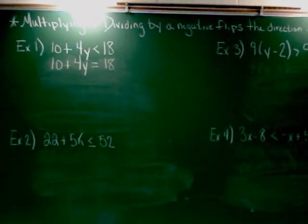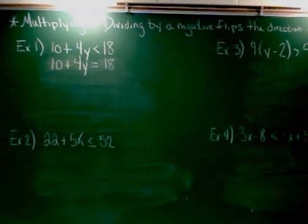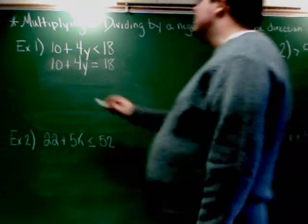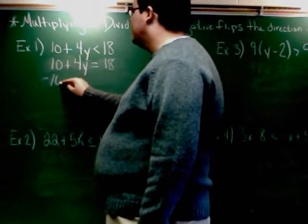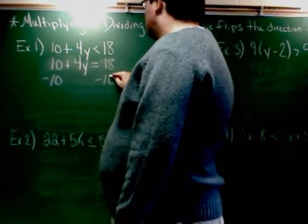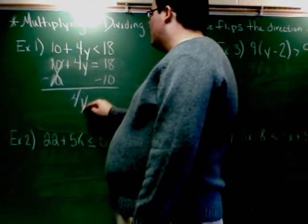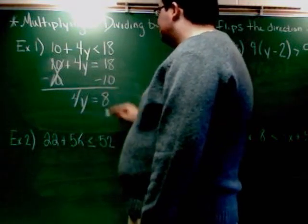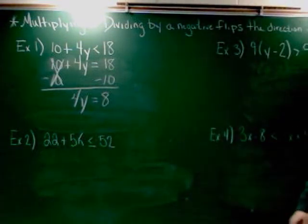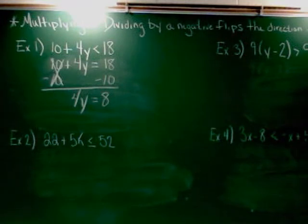So we know that 4y is where it's supposed to be on the left side. We know that 18 is where it's supposed to be on the right side. The only thing that's not where it's supposed to be is the 10. So I've got to go ahead and move the 10 out of the way. And I'm going to do that by subtracting. When I do that, I get 4y equals 8.